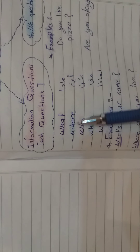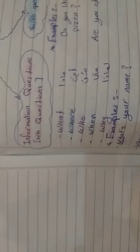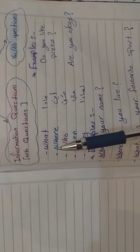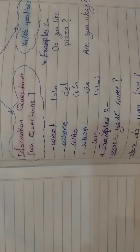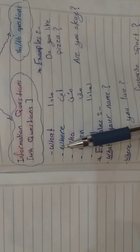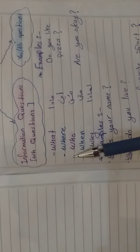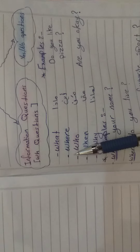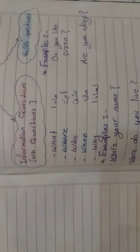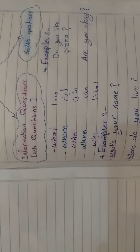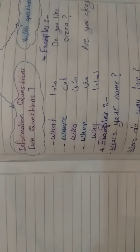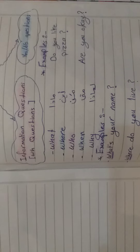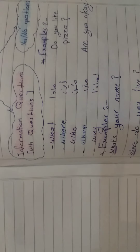Like what, where, who, when, and why. If the question begins with a WH word, it means that it is an information question, and I will answer with an information. إذا السؤال يا خامس بيبدأ بـ what, where, who, when or why، معناها إنه information question وعلى طول بفهم إنه السؤال بده معلومة.